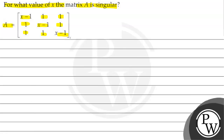So, let's note the key concept here. To call any matrix singular, we need to understand what that means. Singular matrix — its meaning is that the determinant of that matrix should be equal to zero.